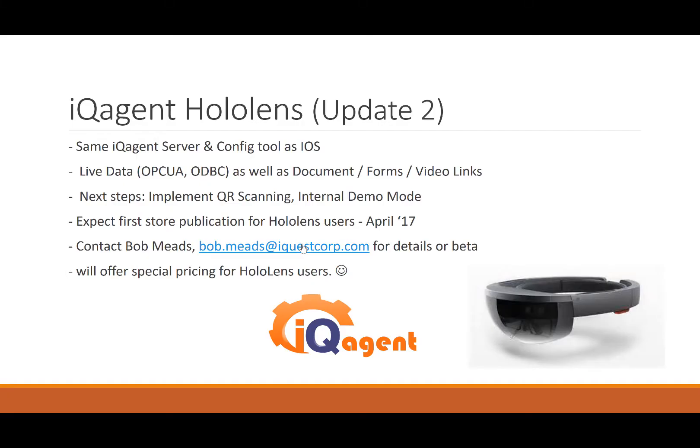So that's it for update two for IQ Agent for HoloLens. Just a reminder — it's the same IQ Agent server and configuration tool, so if you already own the product it'll work with that. We can show live data from OPC or ODBC, as well as documents, forms, video links, whatever you want. The next step is we're going to implement QR scanning where we can scan the current POI QR codes and pull up the relevant POIs.